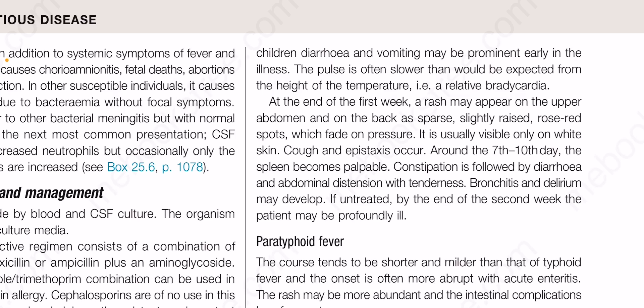At the end of the first week, a rash may appear on the upper abdomen and on the back as sparse, slightly raised, rose-red spots which fade on pressure. It is usually visible only on white skin. Cough and epistaxis occur around the seventh to tenth day, and the spleen becomes palpable.